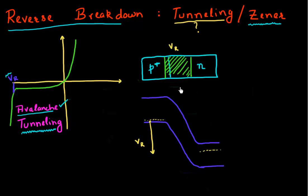Now let me put myself in the shoes of a carrier in this p-n junction. If I'm an electron situated here in my p-plus region, I would love to go down the hill and go into my n region, because electrons like to go down the hill. So I would like to go from this p-plus region into this n region.